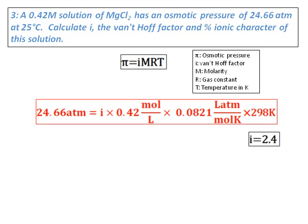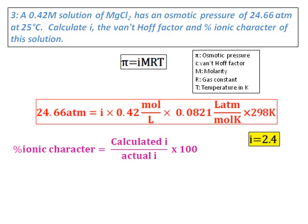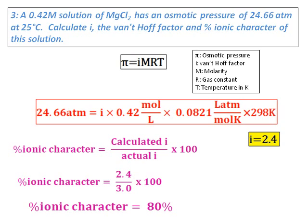The formula for percent ionic character is: % ionic character = (calculated i / actual i) × 100. Magnesium chloride has one Mg²⁺ and two Cl⁻ ions, so actual i = 3. Therefore, % ionic character = (2.4 / 3) × 100 = 80%.